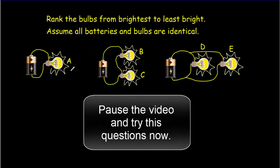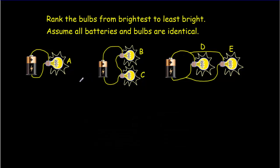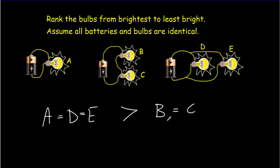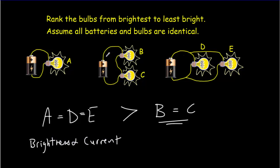Second question — pause the video, try it, and come back. The brightest bulbs would be A, D, and E, and they would all have equal brightness, which would be greater than either bulbs B and C. B and C have the same brightness. The brightness of the bulb is directly proportional to the amount of current going through it. In the second circuit, remember the current doesn't get used up, so the current is the same all the way through the complete cycle — those two bulbs must have the same brightness.